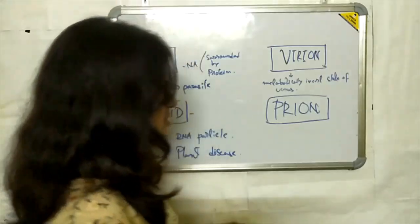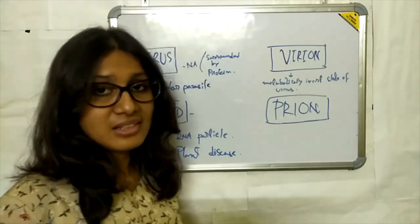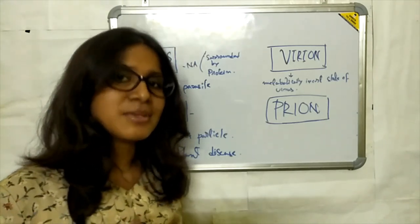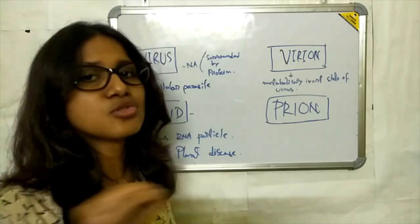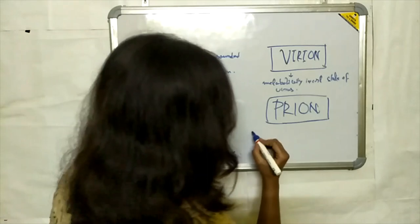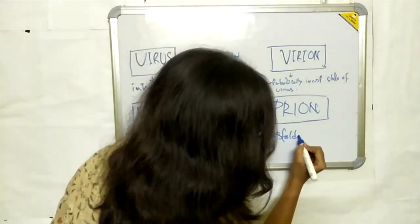Prions are some mysterious particles. They do not have any nucleic acid. They are some misfolded protein which cause some related cellular proteins also to misfold. They are misfolded protein.